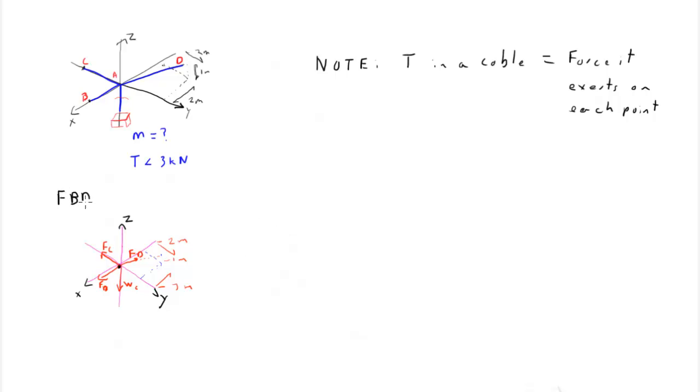Step two is equations of equilibrium. So we classify this broadly as step one, get a free body diagram. Step two is equations of equilibrium. So it's a three-dimensional system, so we will have three equations of equilibrium.